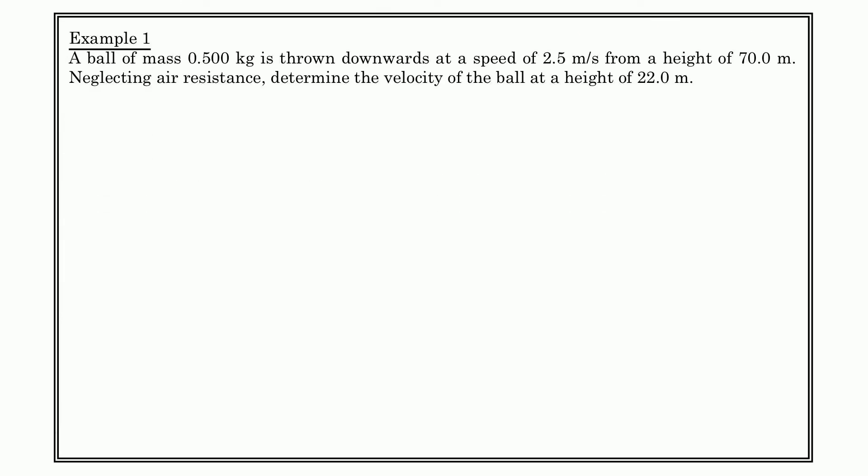So here's example one. A ball of mass 0.5 kilograms is thrown downwards at a speed of 2.5 meters per second from an initial height of 70 meters. If we neglect air resistance, determine the velocity of the ball at a height of 22 meters. This is a very typical grade 11 problem where really we're looking at the conservation of energy between gravitational potential energy and kinetic energy, because we're talking about speeds and velocities, but we're also talking about heights.